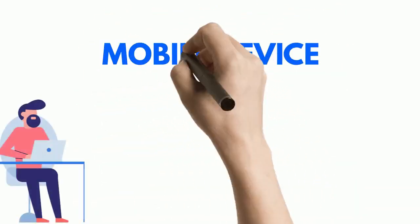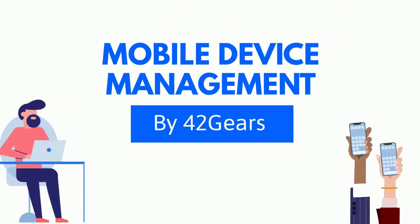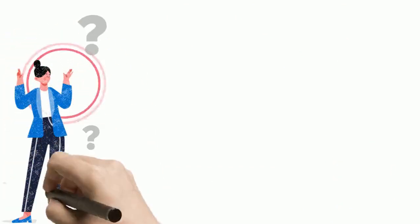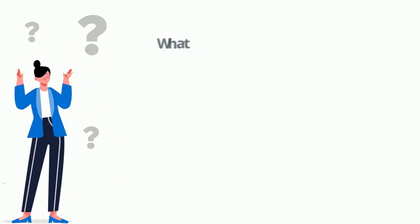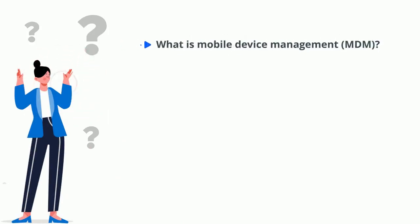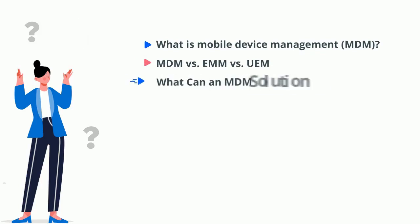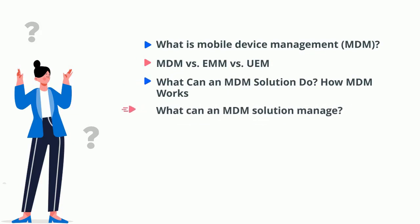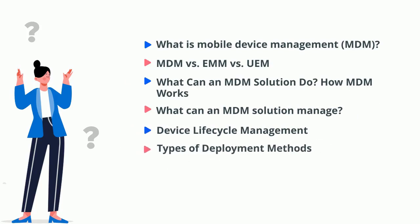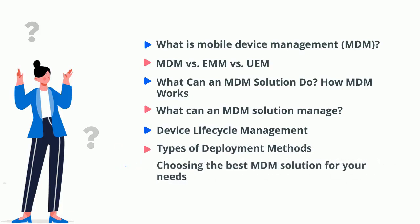Welcome to the mobile device management guide by 42Gears. We'll start by answering the question: what is mobile device management, also known as MDM? Then we'll compare three of the most commonly used terms in the industry — MDM, EMM, and UEM. Next, we'll ask what an MDM solution can do and consider how MDM works, what it can manage, and how it helps manage devices throughout the entire lifecycle. We'll finish by looking at deployment methods and how to find the best MDM solution for your needs. Let's get started.